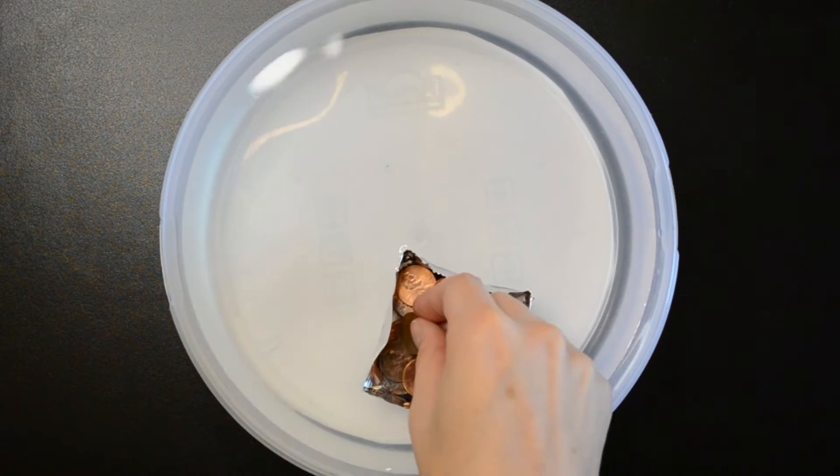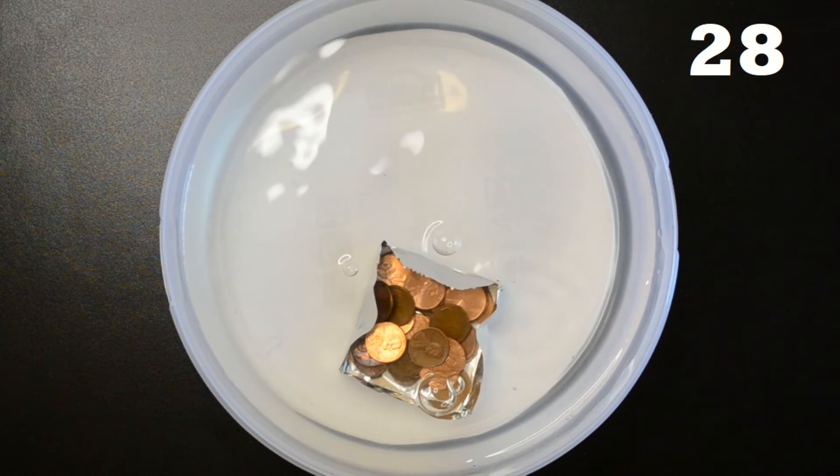The walls start collapsing in. We saw this with the canoe as well. This is decreasing the volume inside our boat so we'll result in less pennies. We got 28 before it sank on 29 which again is less than we predicted.